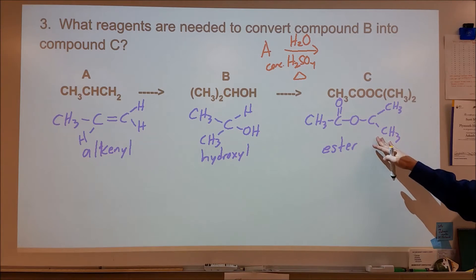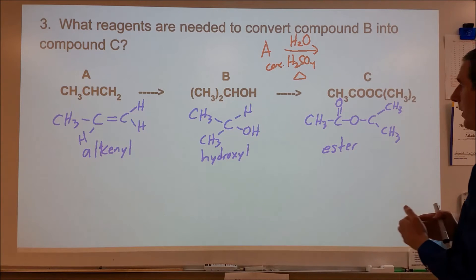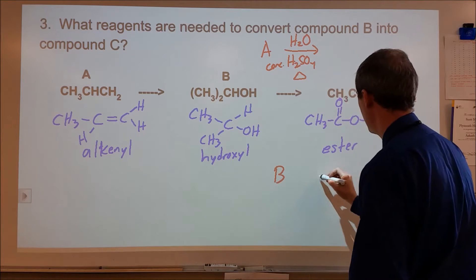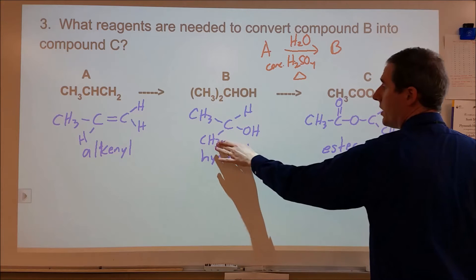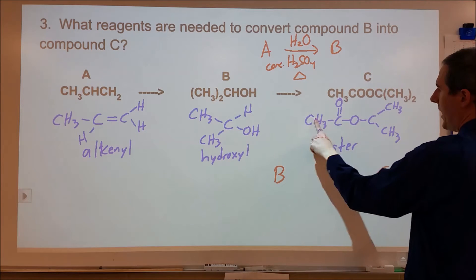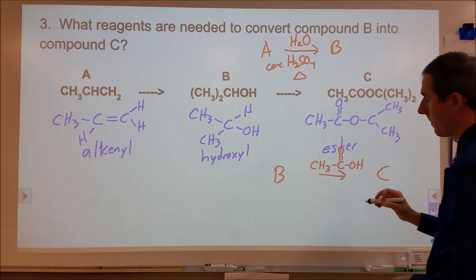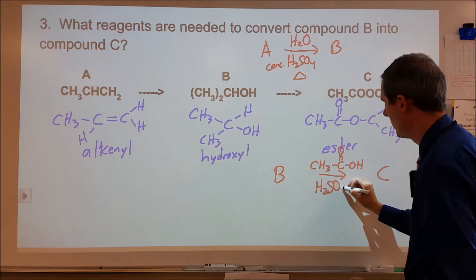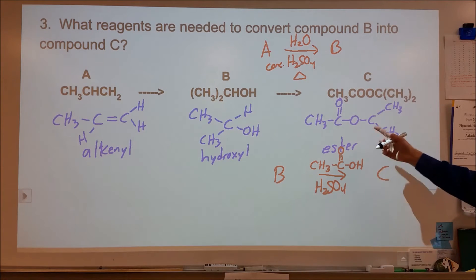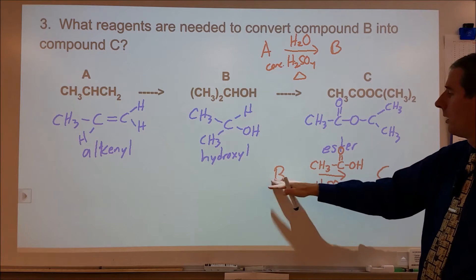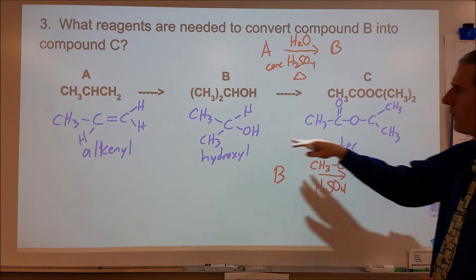Next, we're turning compound B into compound C — going from an alcohol into an ester. For that, we're going to need a carboxylic acid and an acid catalyst, so we'll use sulfuric acid again. What we need to add is the CH3C(=O)O group — specifically, we need to add ethanolic acid, or acetic acid. We'll do an esterification with an acid catalyst, requiring heat and possibly reflux. We'll run into an equilibrium situation, so we may need to separate the products, perhaps using distillation to separate off the more volatile ester from the alcohol.